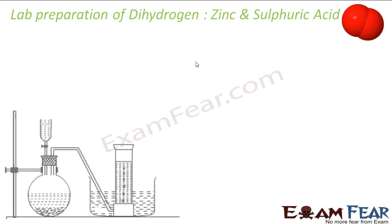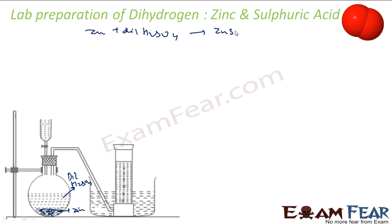Now let's see the lab preparation of dihydrogen in detail. In the lab, we add zinc to dilute H₂SO₄. The reaction proceeds and gives zinc sulfate plus H₂ gas. The hydrogen gas produced is collected over water — this is a very common method used in the lab to prepare dihydrogen from sulfuric acid and zinc.